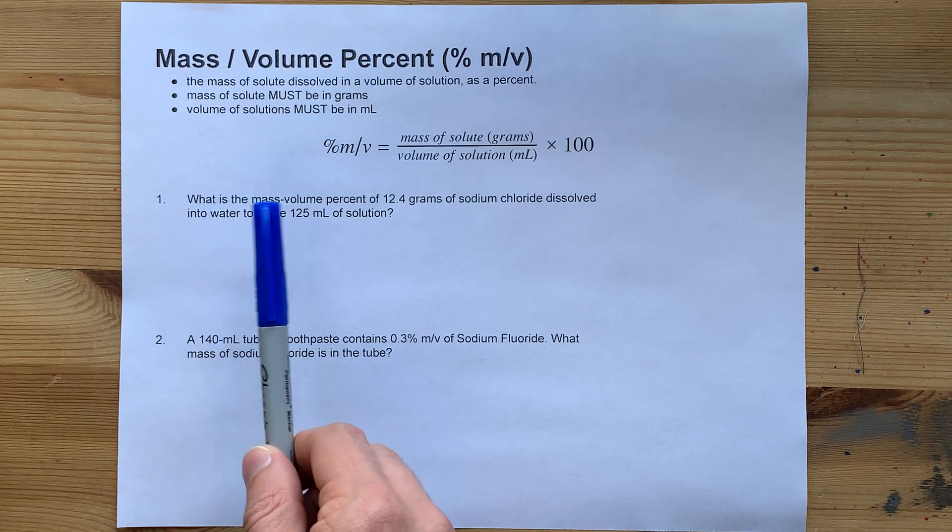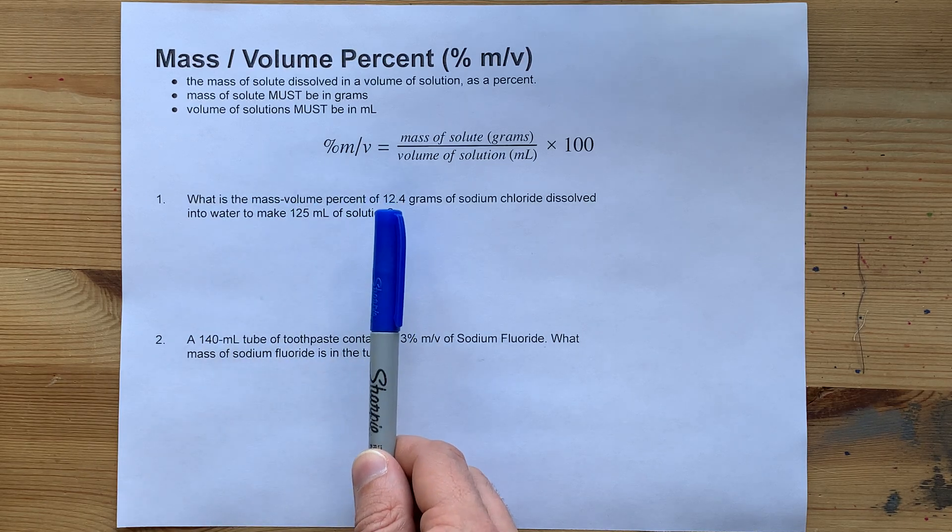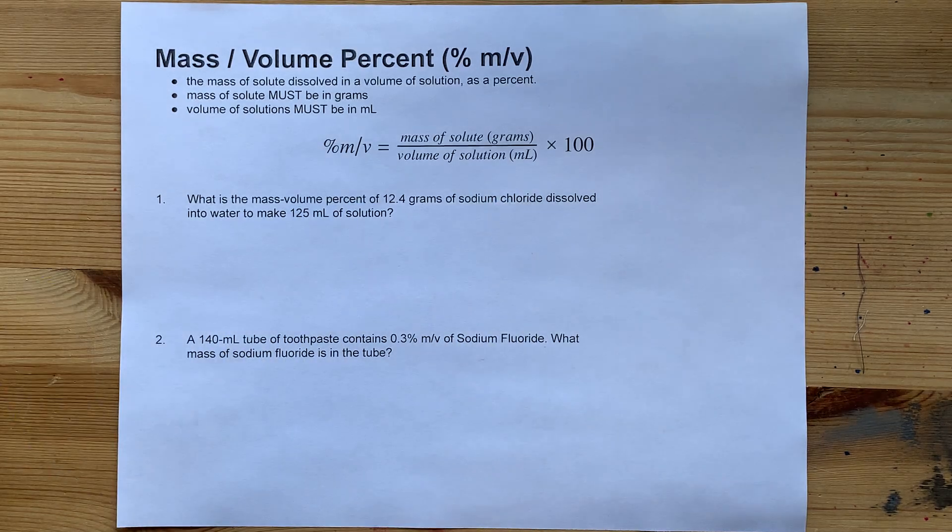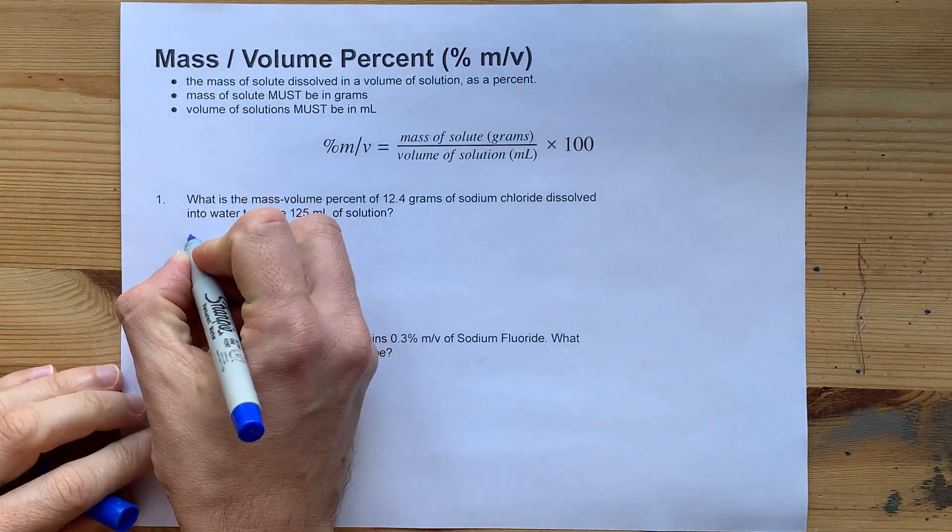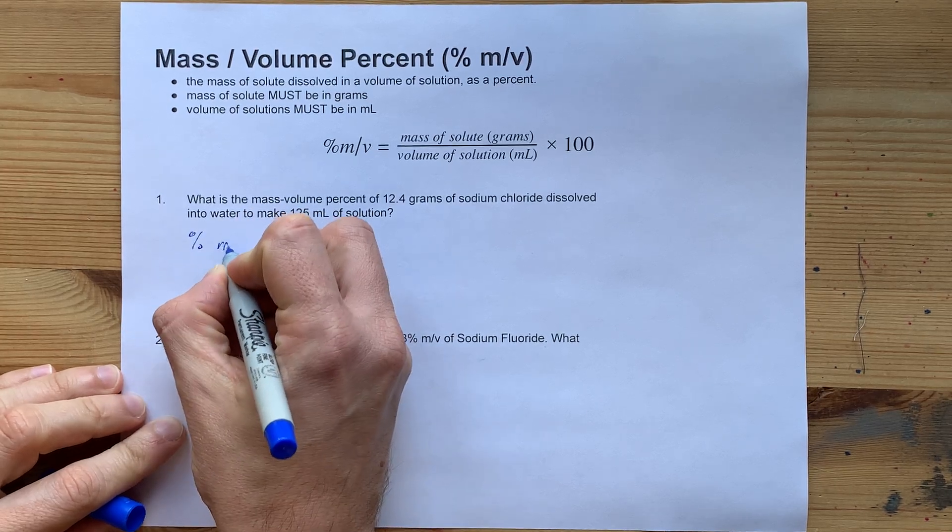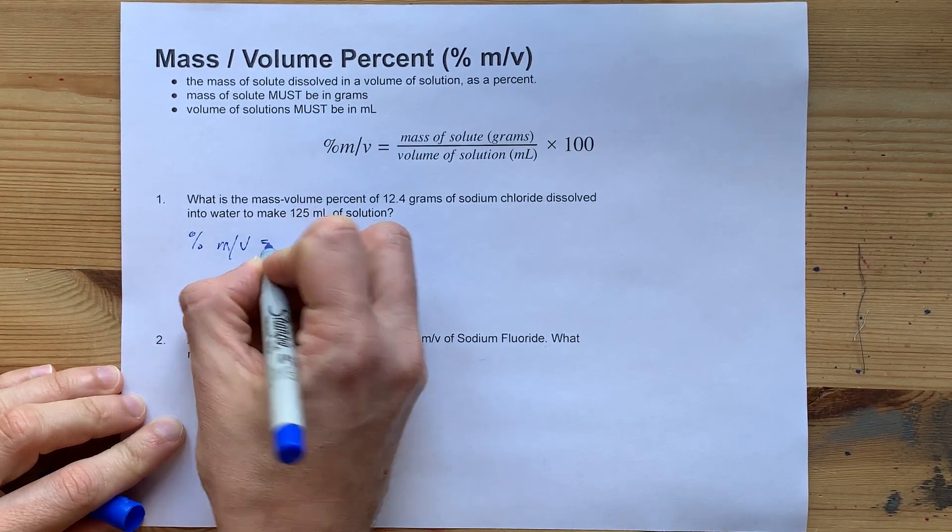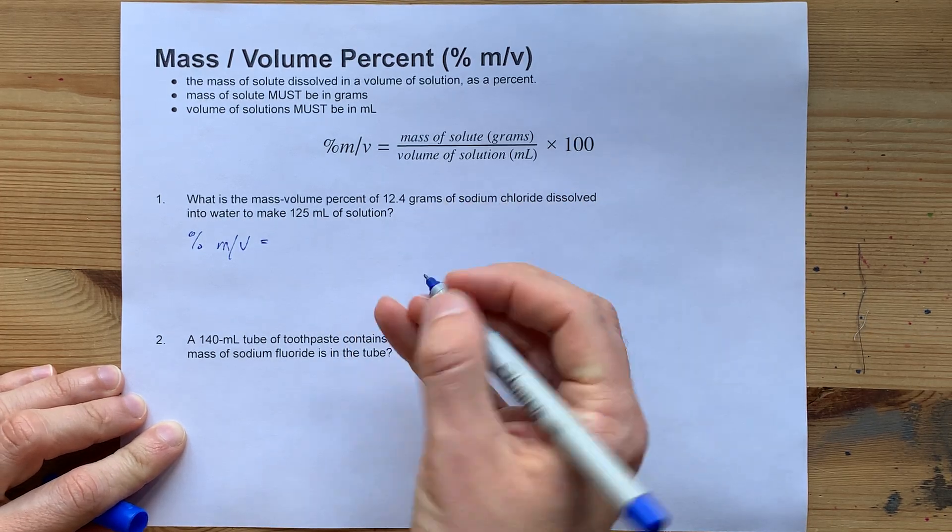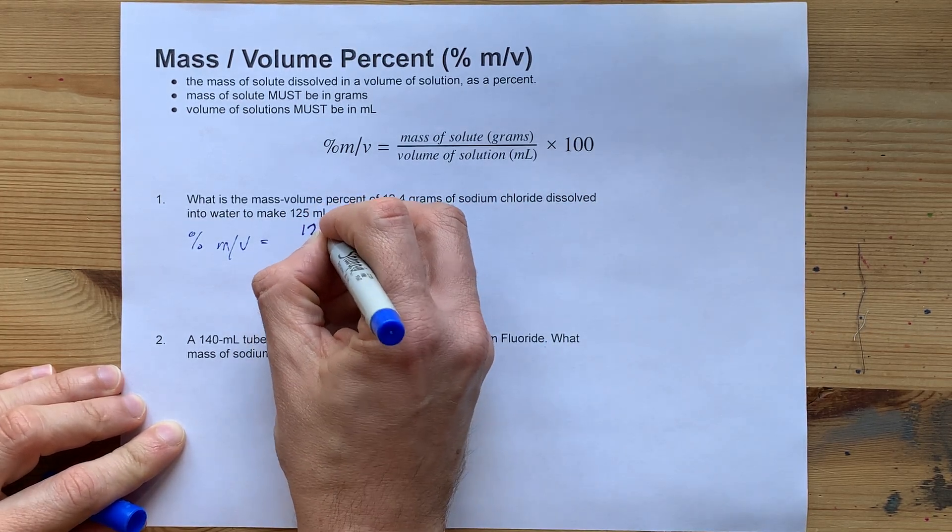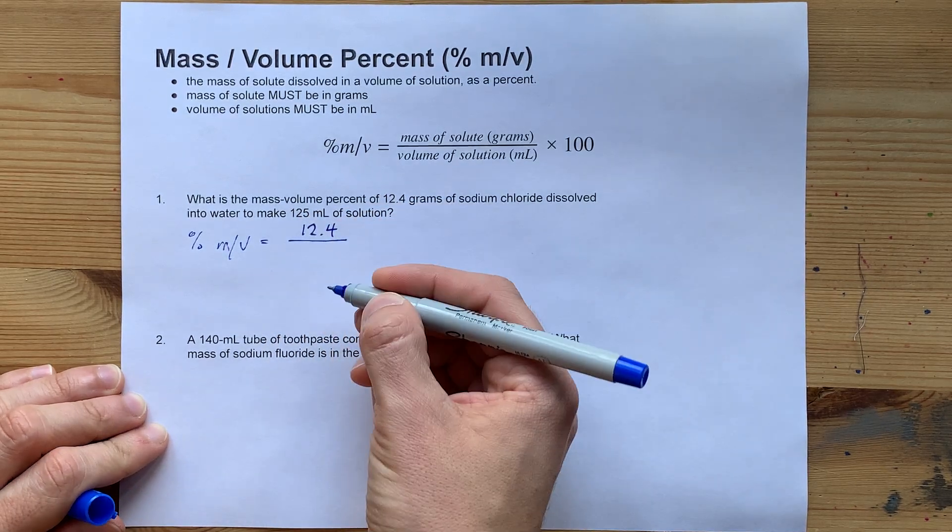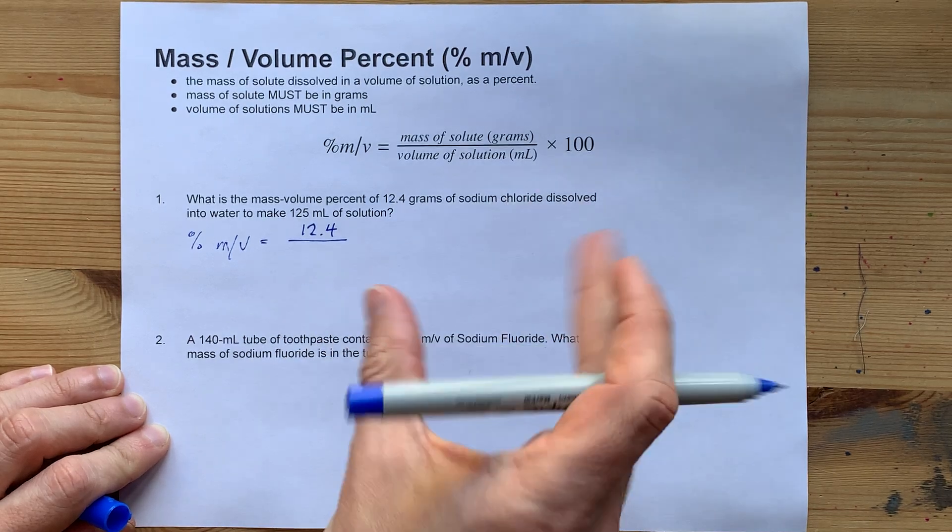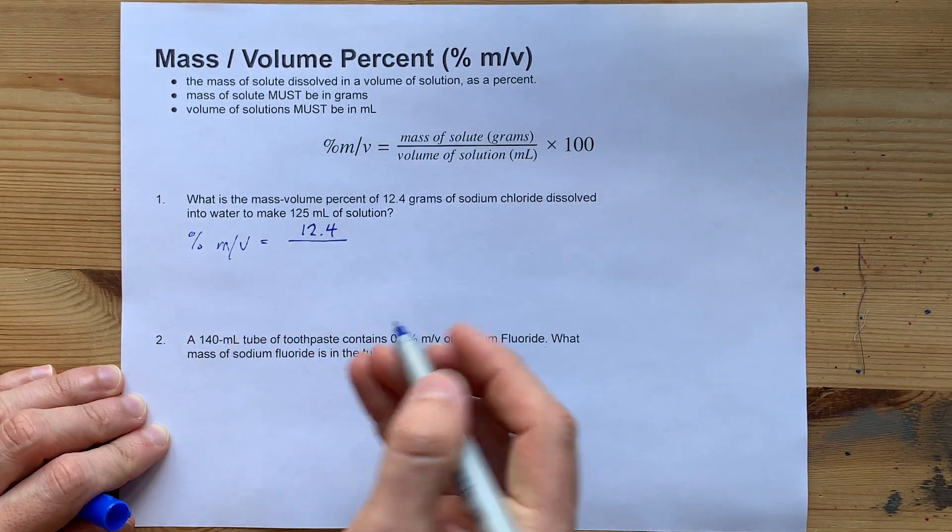What is the mass volume percent if you dissolve 12.4 grams of something to make 125 milliliters of solution? Well, by definition, mass volume percent has the number of grams of solute, the thing that's dissolved, on the top of the fraction, and the volume in milliliters of the total solution. Remember, solution is the combination of solute and solvent.